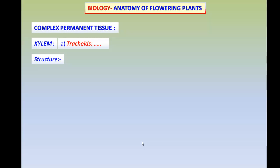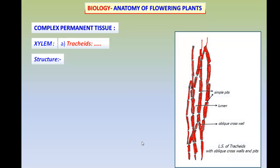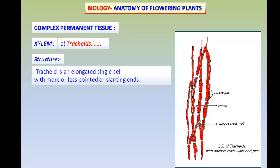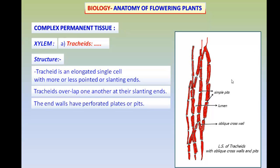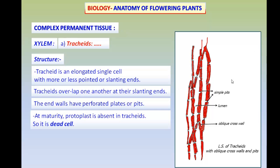The tracheids originate from Procambium and Vascular Cambium. Structurally, a tracheid is an elongated single cell with more or less slanting ends. Tracheids overlap one another at their slanting ends, and their end walls have perforated plates or pits. At maturity, their protoplast is lost, so the tracheids become dead cells.